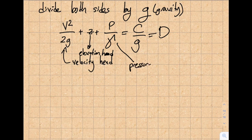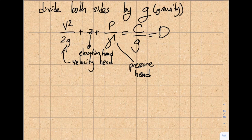Why do we do this? Let's look at the units. Every term on the left-hand side must have the same units since we're adding them. Looking at this form, v²/2g is in meters, z is in meters, and p/(ρg) is also in meters. So the constant D also has units of meters — this is why these terms are called 'heads,' as they all represent a length in meters.